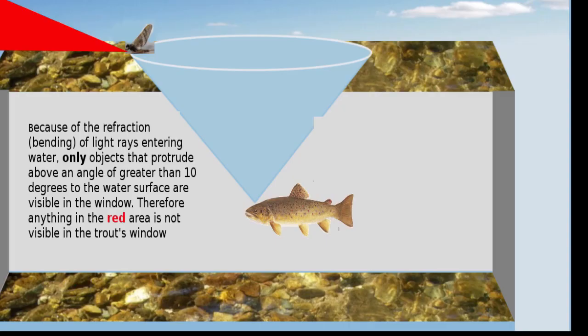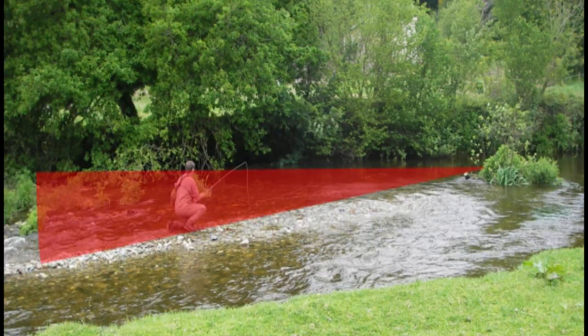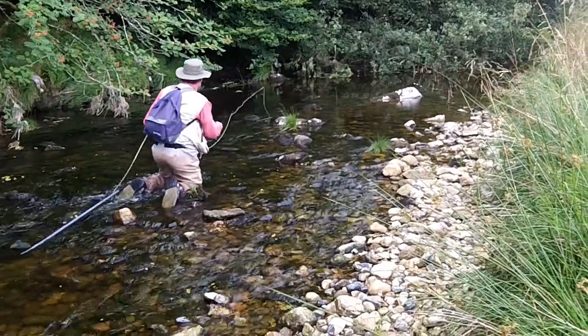Because of the laws of refraction, fish cannot see objects which lie below an angle of ten degrees to the water surface at the edge of their window. The red triangles in these diagrams show this blind spot extending outwards all around the edge of the trout's window.